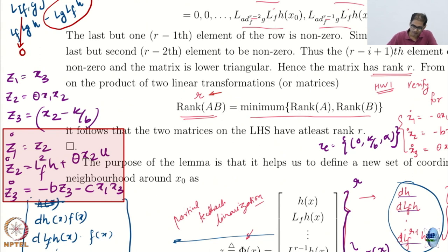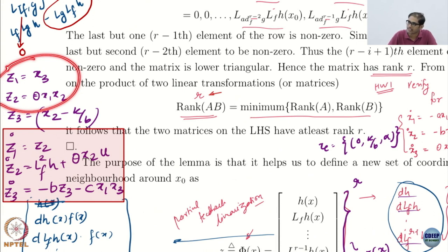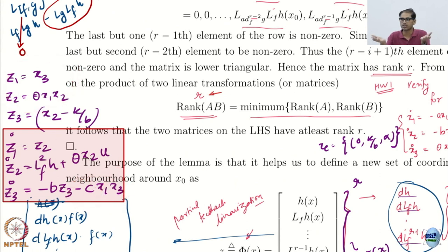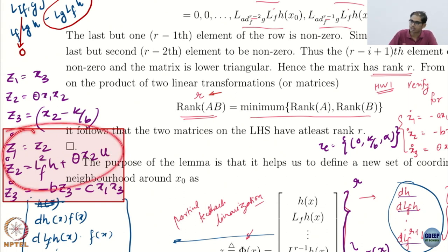This is a rather nice system. All I have to do is check: when psi is zero, what happens to the eta dynamics? When psi is zero, these terms are zero, so I am left with Z3-dot equals minus B times Z3, which is exponentially stable. So we can actually use these results. All I have to do is design a U so that this system becomes exponentially stable.